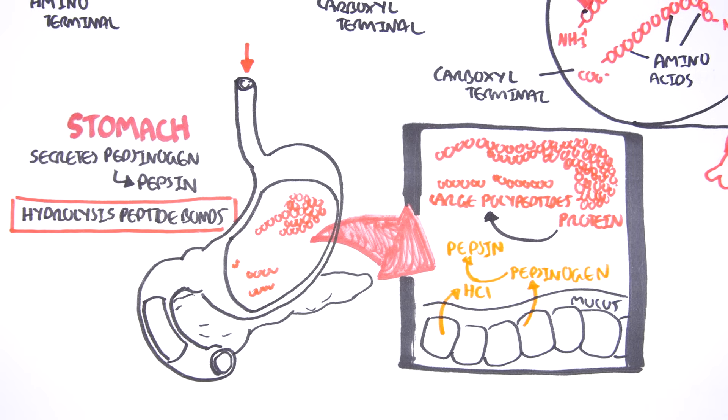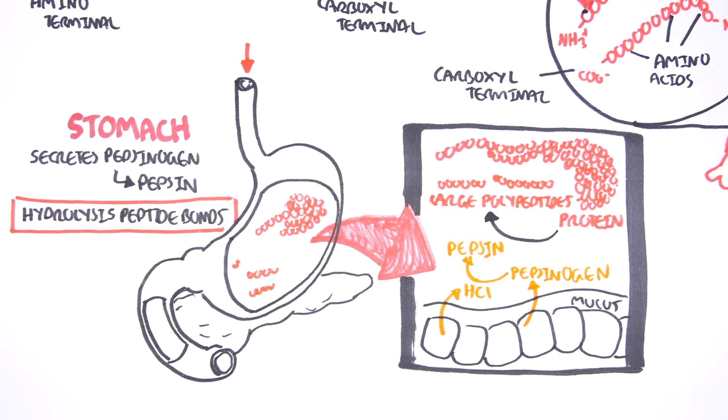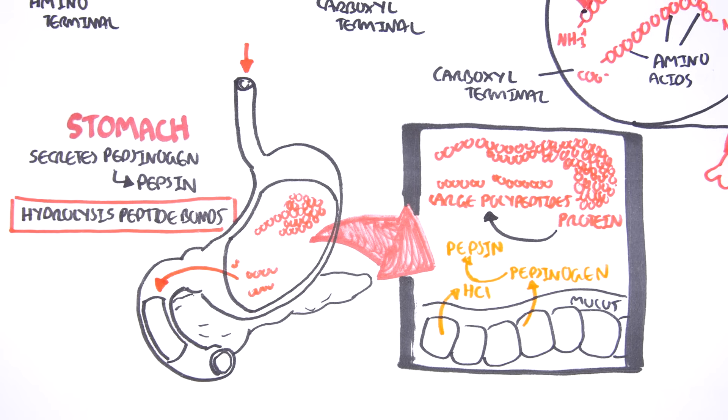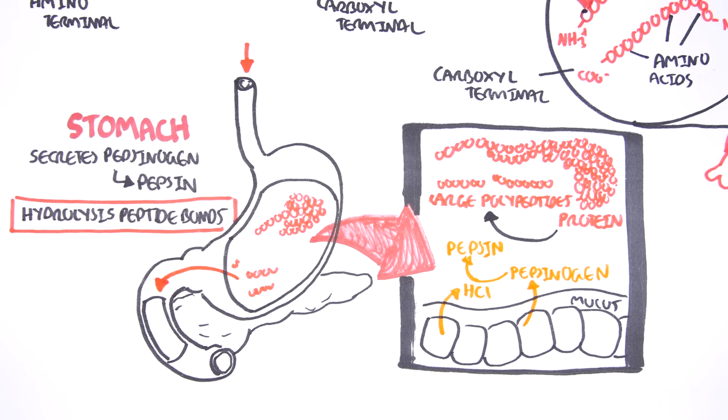From the stomach, the large polypeptides will enter the small intestine. The first part of the small intestine, which is called the duodenum, is the main site where protein digestion and absorption takes place. So what happens with these proteins, these polypeptides, once they're in the duodenum?